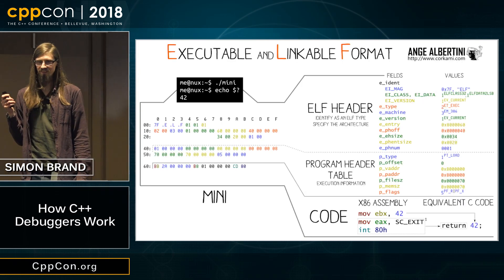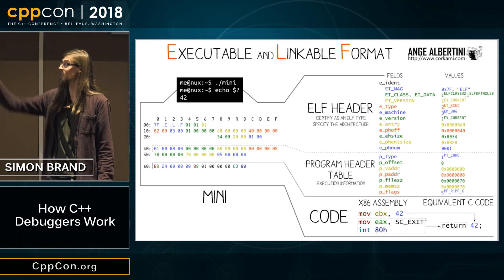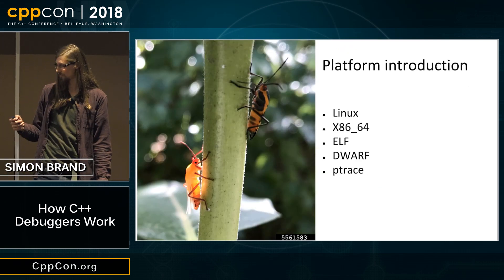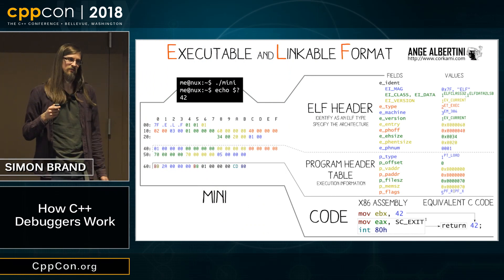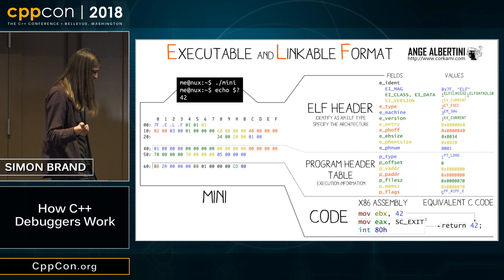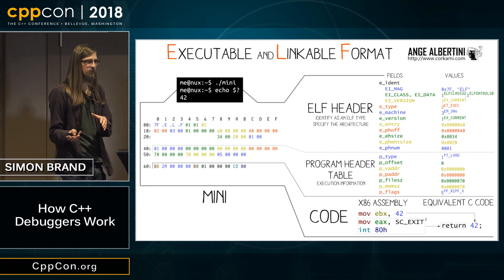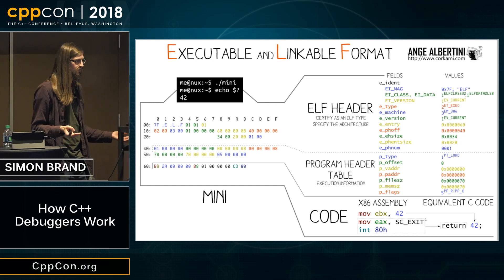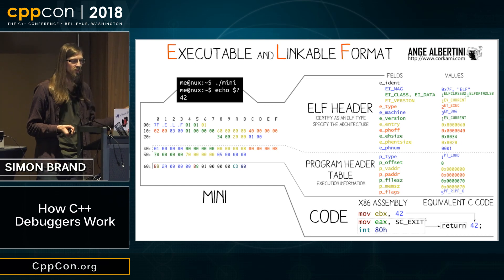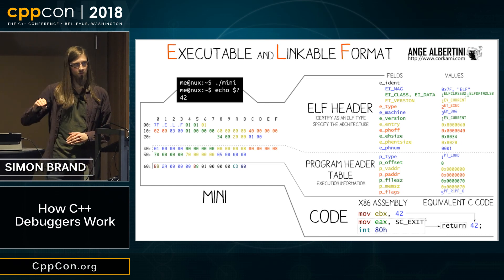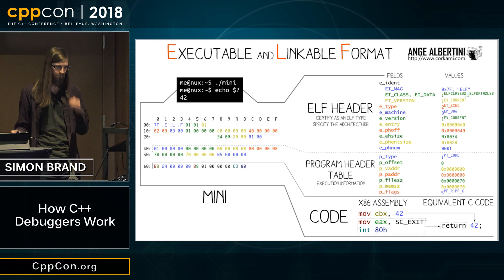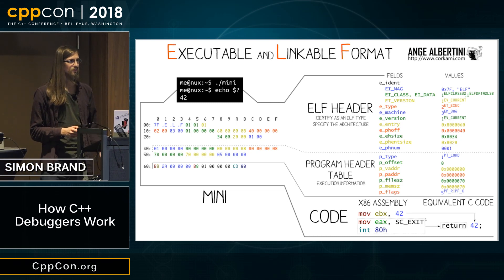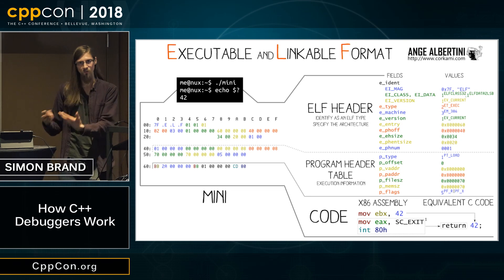ELF is a binary format for executables and objects. It consists of a header which tells you about what the executable is — what machine it was compiled for — and then a bunch of code separated into sections. You don't need to know a whole lot about ELF, but this is the main format for Linux executables, so it's useful to learn a little if you want to work on debuggers.